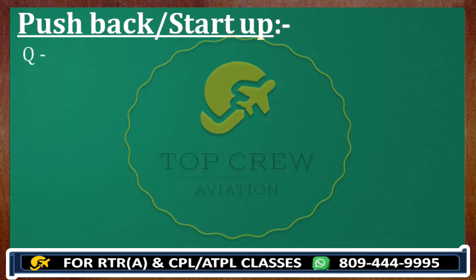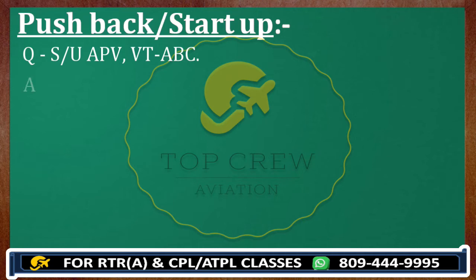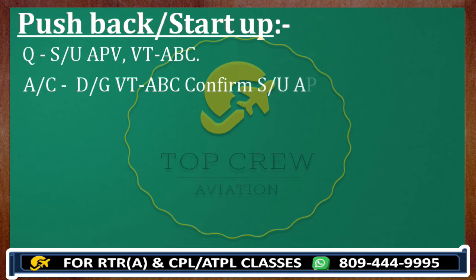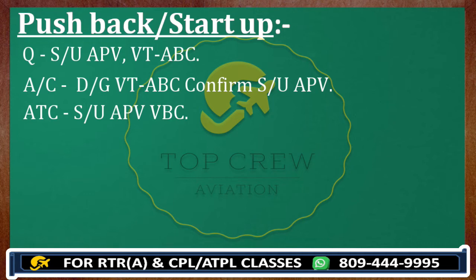Case number two: the question is startup approved, Victor Tango Alpha Bravo Charlie — or any other call sign in your examination. You need to get confirmation. Ask: Delhi Ground, Victor Tango Alpha Bravo Charlie, confirm startup approved. Your ATC will tell you startup approved, Victor Bravo Charlie. ATC can use abbreviations of your call sign — if your call sign is Victor Tango Alpha Bravo Charlie, ATC may tell you Victor Bravo Charlie. But you cannot use that abbreviation with any other ATC, only with that particular ATC which gave you the abbreviation.